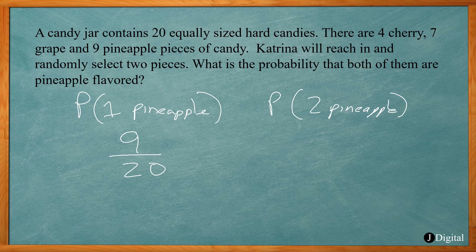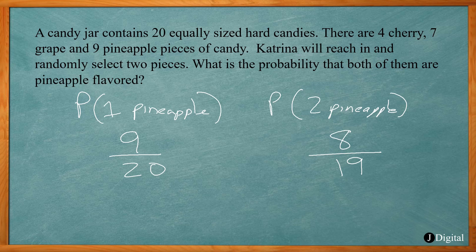This problem involves sampling without replacement — we're not putting the candy back. So on the second draw, there are 19 total pieces left and only eight pineapple remaining. The probability of selecting pineapple the second time is 8 over 19. Multiplying 9/20 × 8/19 and simplifying gives 18 over 95 — that's the probability that both selected candies are pineapple flavored.